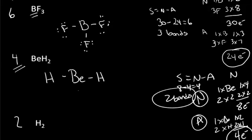Hydrogen only needs two electrons to satisfy its octet. Each hydrogen comes to the compound with one electron for a total of two electrons. Four minus two is two divided by two is one. We predict one bond for the S equals N minus A rule, and that is the accepted Lewis structure for hydrogen.